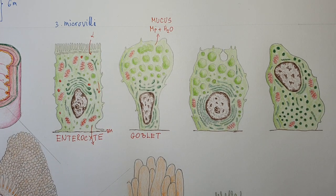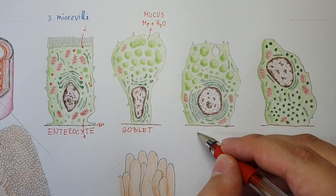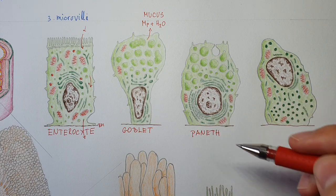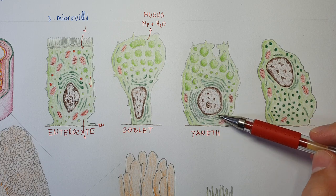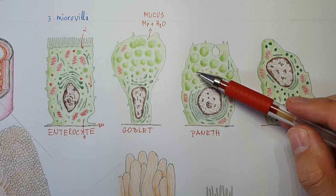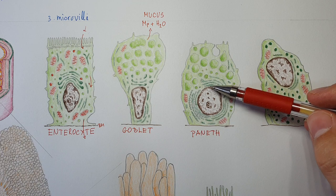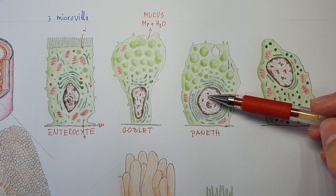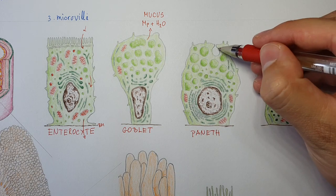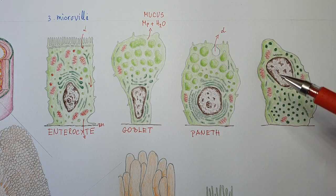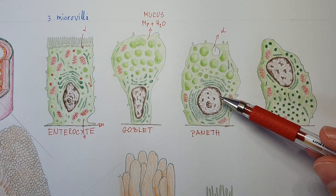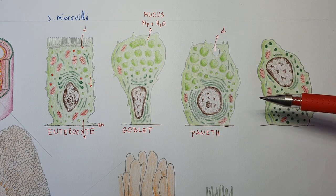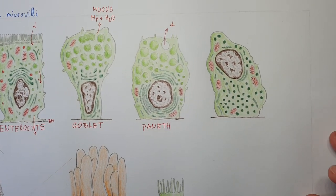The third cell type is called the Paneth cell. This cell has a well-developed endoplasmic reticulum and granules containing proteins like defensins — antimicrobial peptides. The Paneth cell secretes these antimicrobial peptides into the lumen, functioning to maintain the microbial flora in the gut and protect the intestinal wall.